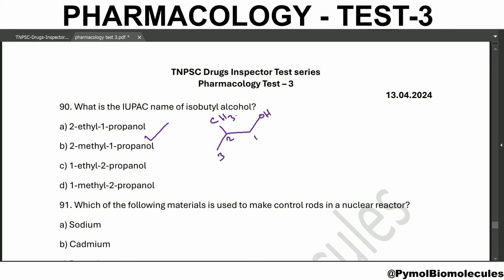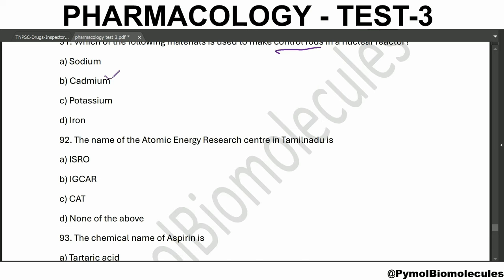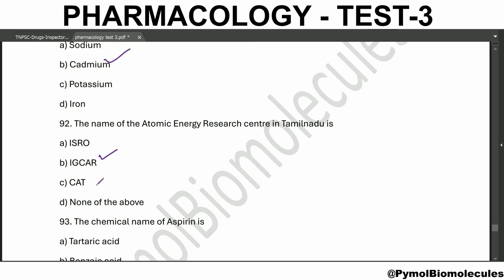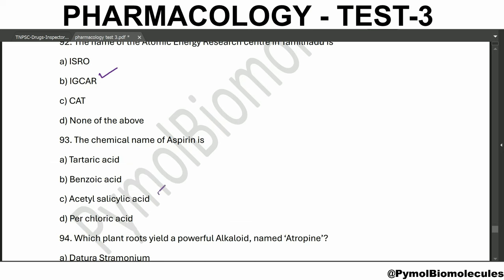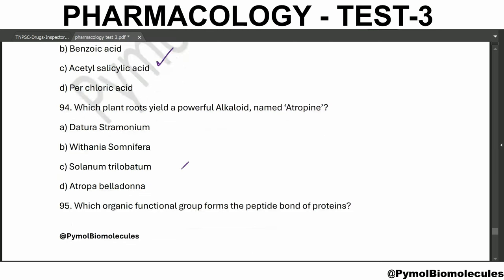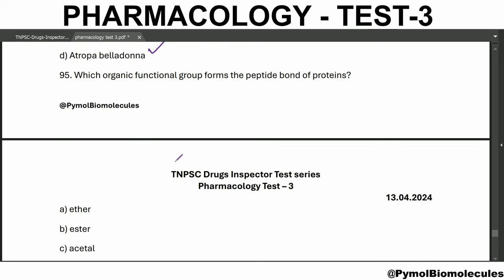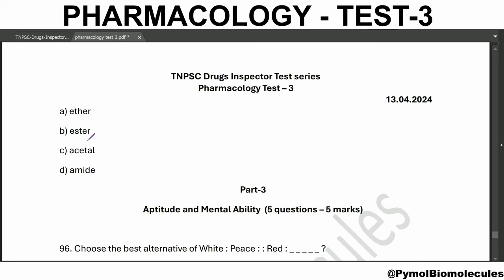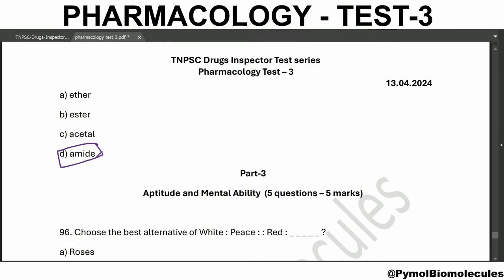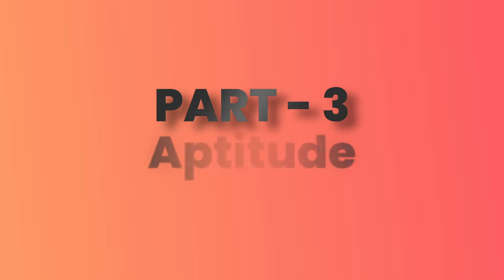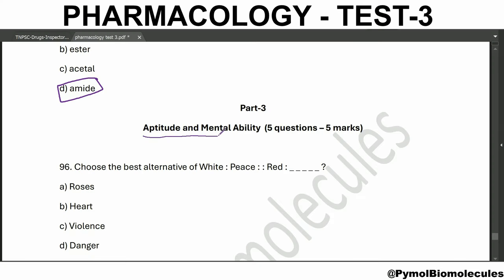The material used to make control rods in a nuclear reactor is cadmium. The name of the atomic energy research center in Tamil Nadu is IGCAR - Indira Gandhi Centre for Atomic Research. The chemical name of aspirin is acetylsalicylic acid. Atropa belladonna plant roots yield a powerful alkaloid named atropine. The organic functional group forming the peptide bond of proteins is amide.